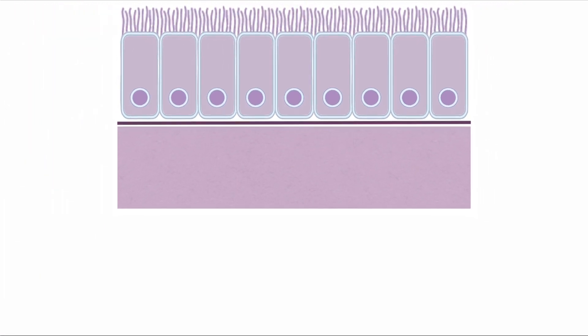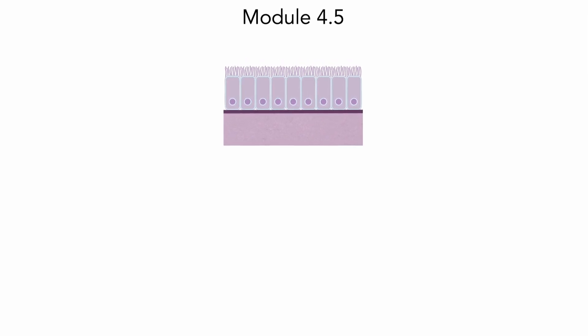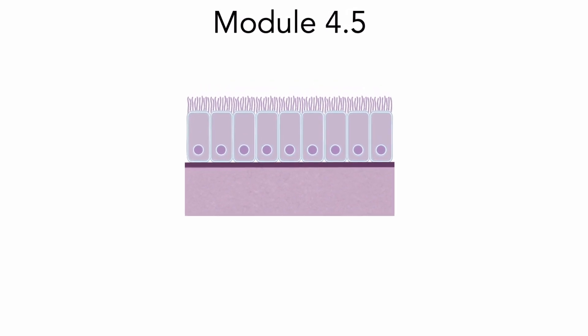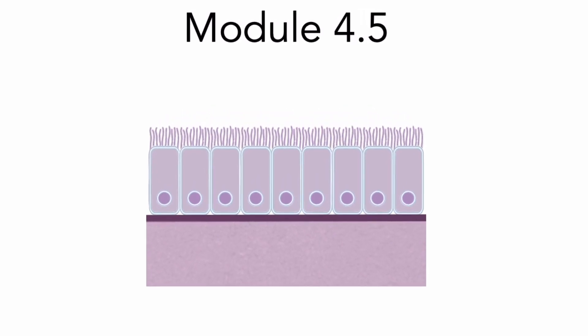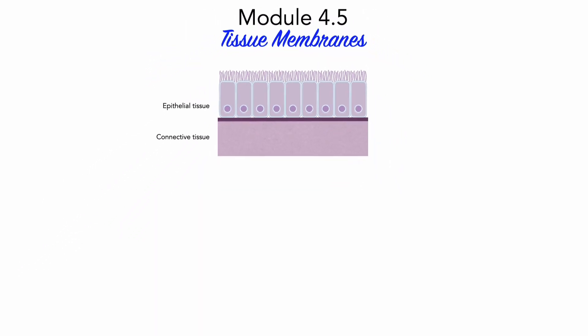At a much broader level, biological membranes can refer to the barriers made up of cells of a tissue or multiple tissues. Such biological membranes are properly called tissue membranes. These tissue membranes line internal passageways and chambers that open to the exterior environment, line sealed internal cavities not open to the exterior environment, cover the surface of your body, and line joint cavities. Having already discussed epithelial tissues and connective tissues, it is timely to introduce tissue membranes, which are all composed of connective tissue with a partial or complete epithelial lining.